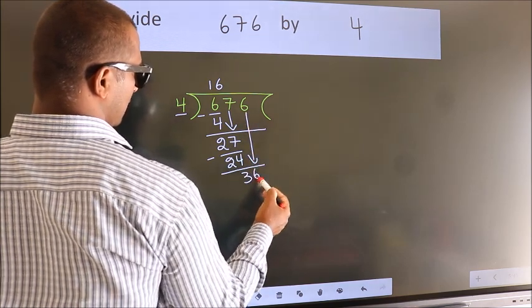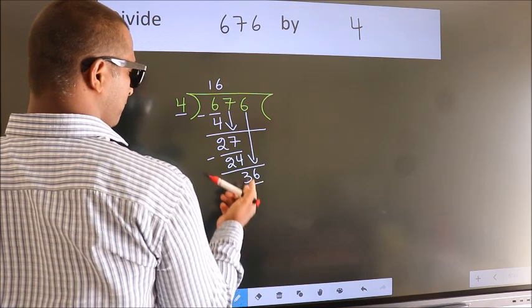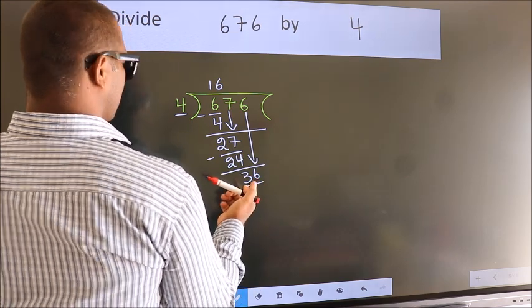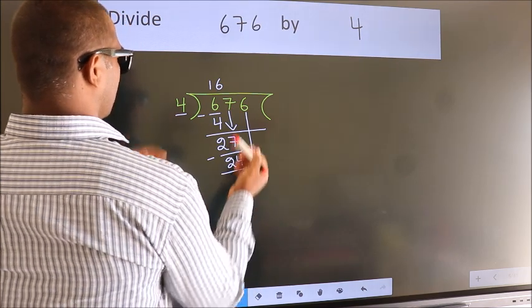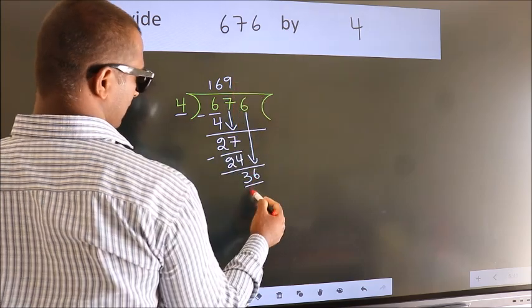So, 6 down. So, 36. When do we get 36? In 4 table, 4 9s 36.